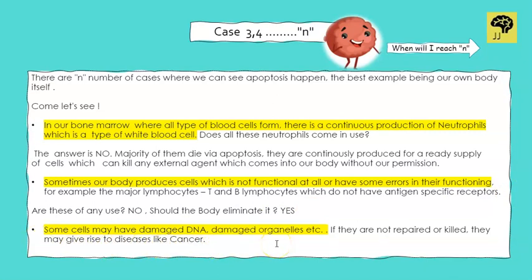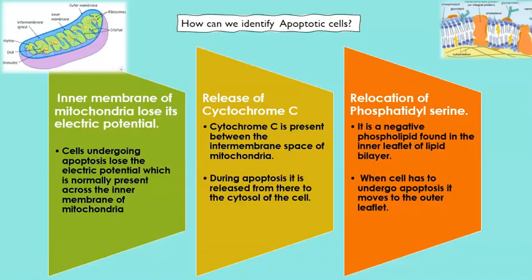The next major example: some cells may have damaged DNA or damaged organelles. DNA carries all our genetic information and is passed to the next generation. If damaged DNA is not repaired or eliminated, it will accumulate and be passed on. So cells containing damaged DNA must be killed, and apoptosis does exactly that.